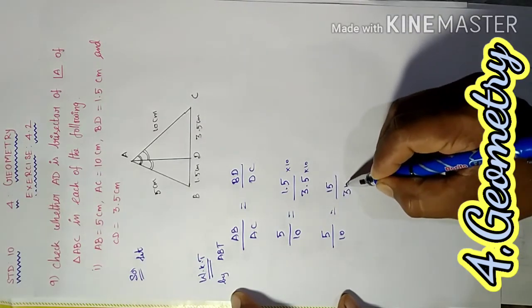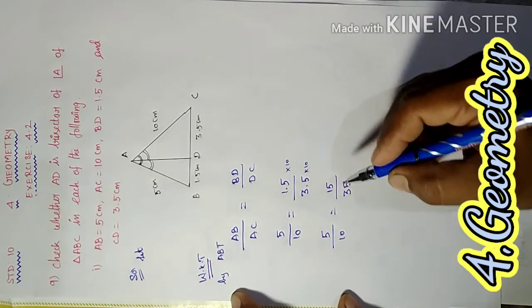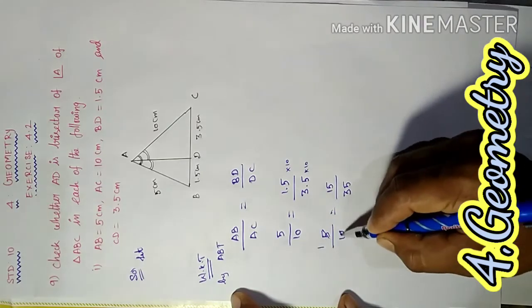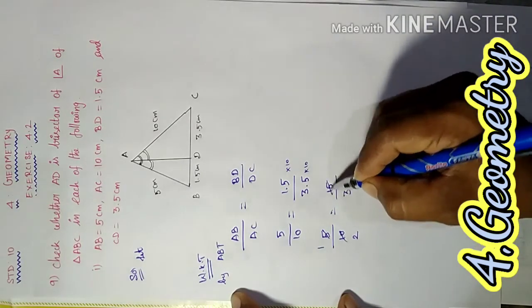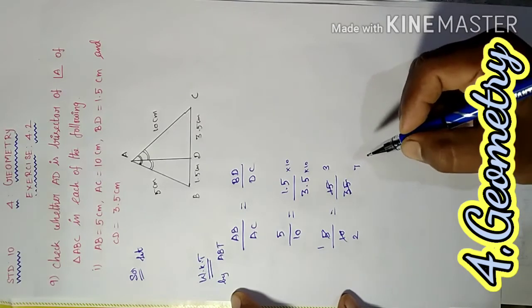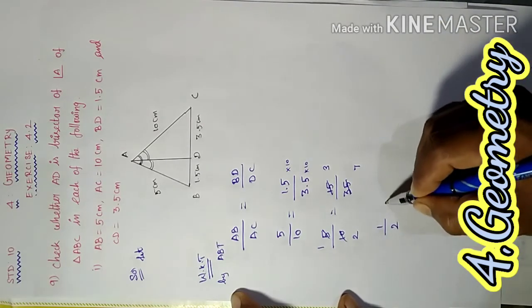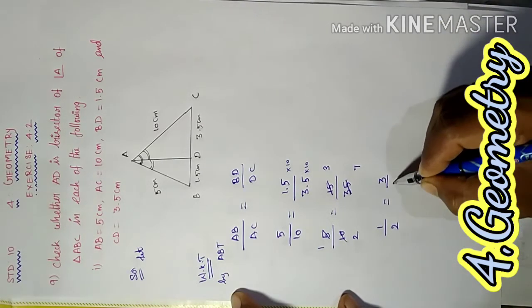5/10 and BD/DC equals 1.5/3.5. Simplifying: 5/10 equals 1/2, and 1.5/3.5 equals 15/35 which equals 3/7. Therefore, 1/2 should equal 3/7.